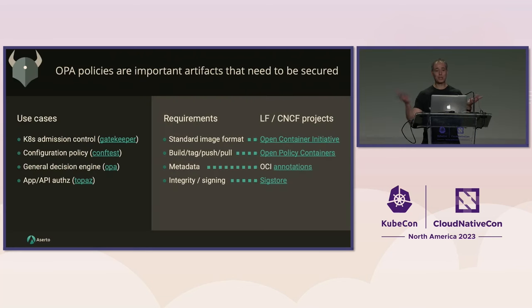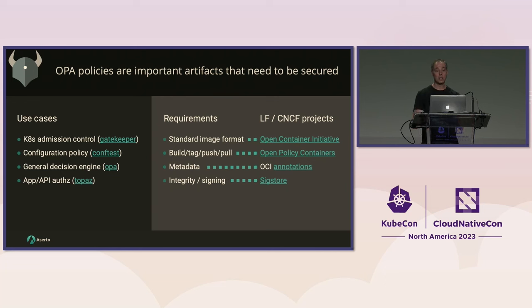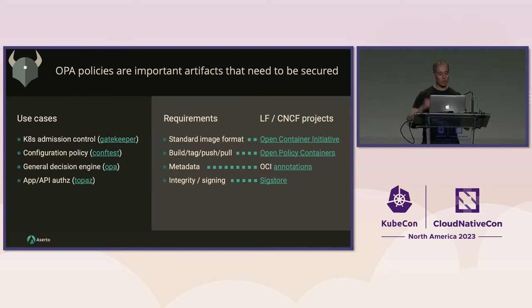Why should you care? What are these OPA policies? These days in the cloud-native world, you use policies for a lot of different things. For example, Kubernetes admission control through the open-source project Gatekeeper. You use them to make sure that your config files obey a policy through a project called ConfTest. You can also use OPA as a general decision engine. If you've never seen the OPA site, it looks like this — it's really pretty, it's got Vikings all over.